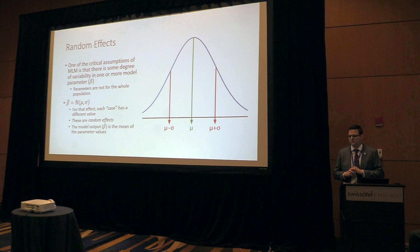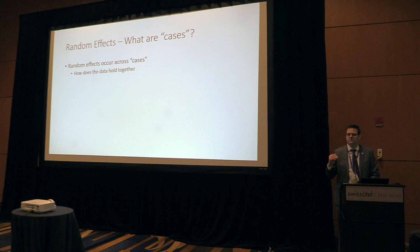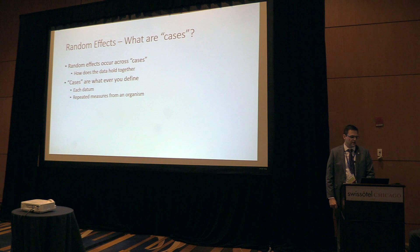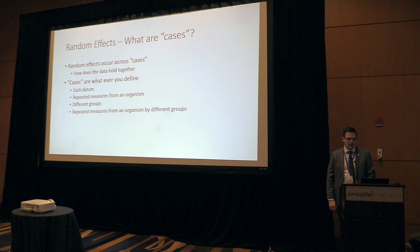One critical assumption of multilevel modeling is that there is variability in that parameter. It's not necessarily the case that everybody from Washington has the same 1.5 unit increase in enjoyment — those parameters aren't fixed for the whole population. The beta parameters in multilevel modeling are drawn from some unknown distribution, and each case or cluster of your data has a different value. These are typically referred to as random effects because they are randomly distributed based on some distribution. I'll refer to these as beta-hat to indicate a random effect.